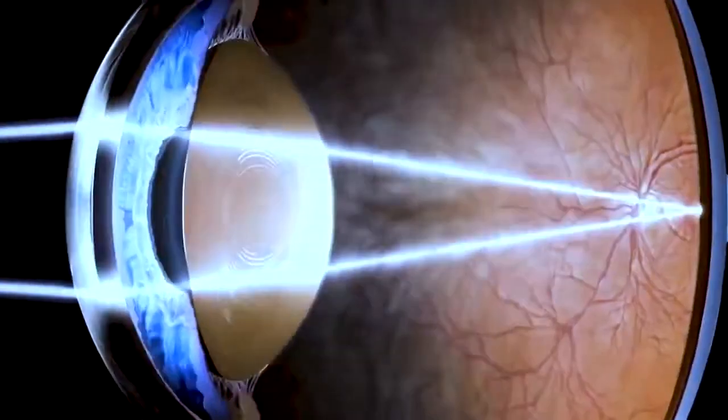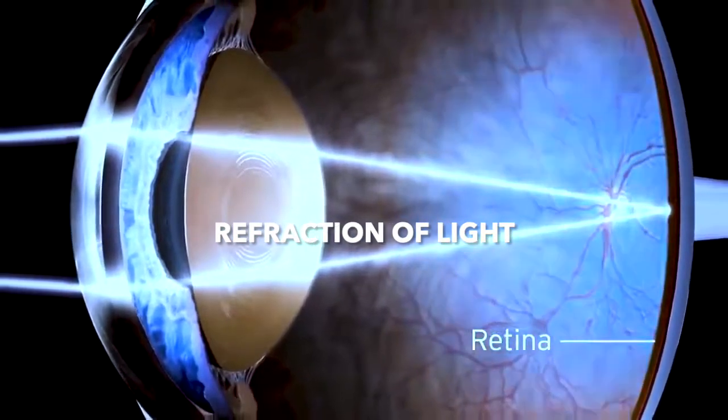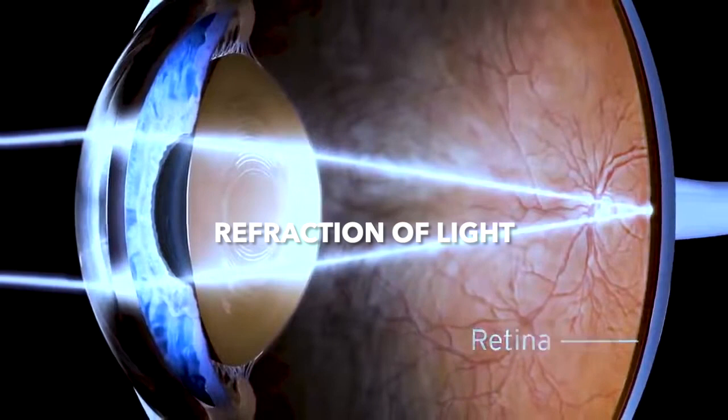The lens can change in thickness to bend the light. This is known as refraction of light, which will focus it onto the retina at the back of the eye.